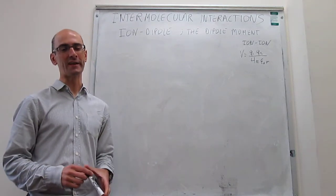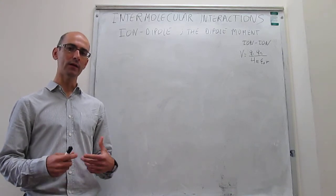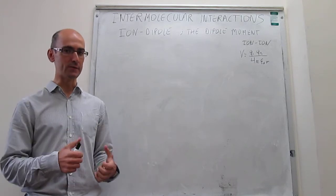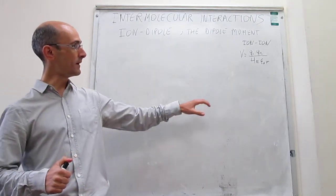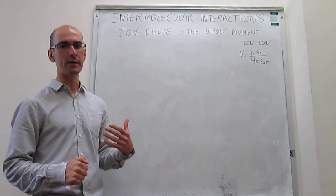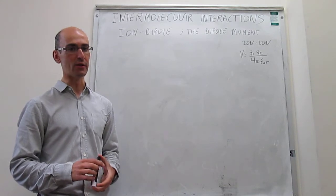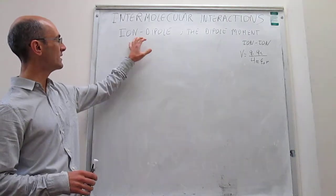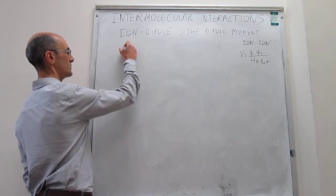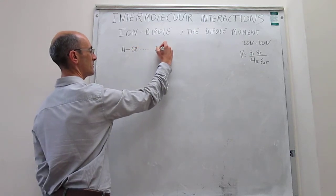In the last video we started an explanation of how intermolecular interactions work, and we studied fully how the attraction or repulsion between two ions is captured by Coulomb's law. Now we move forward by trying to study other types of intermolecular attractions. The next one we're going to study is ion-dipole — for example, the interaction between HCl and sodium ion.